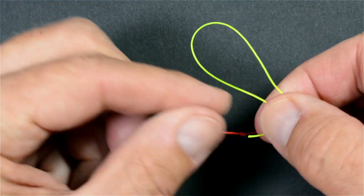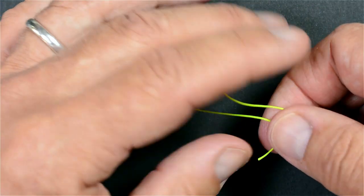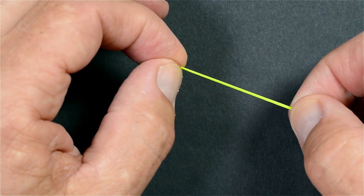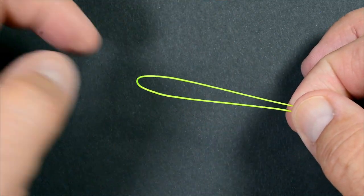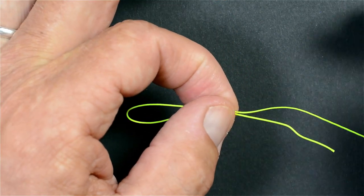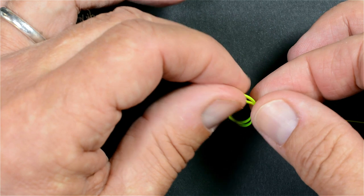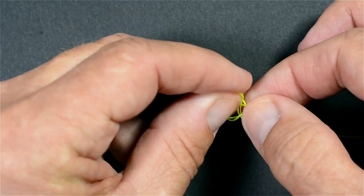Then you take the next line and do exactly the same procedure. Making this circle, twist it and go through.